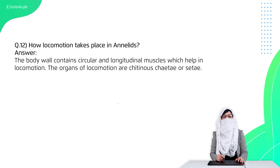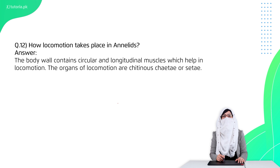Question 12 is: how does locomotion take place in annelids? In annelids, they have circular and longitudinal muscles. They have worm-like motion and can crawl. They also have chitin setae as well as parapodia which assist in locomotion.